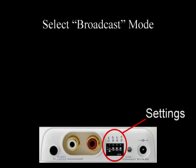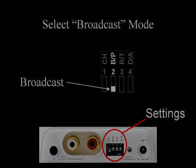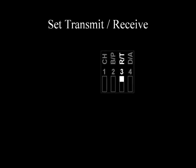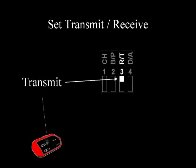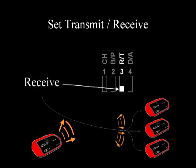Set all your pipelines to broadcast mode by moving switch 2 on each unit to the bottom. Using switch 3, set one pipeline as the transmitter by setting switch 3 to the top, and all the other units as receivers by setting switch 3 to the bottom.